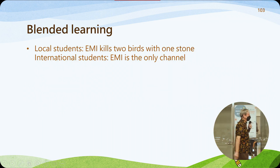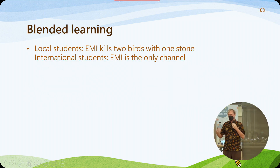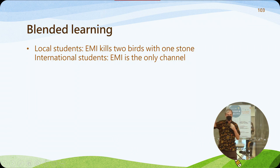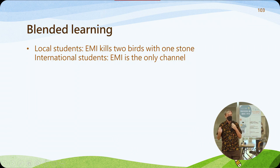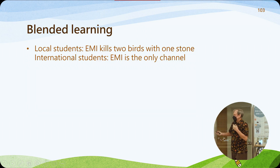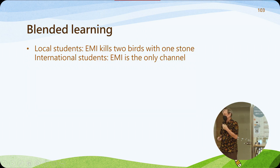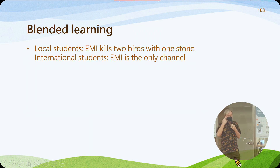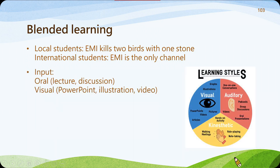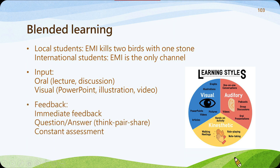For local students, EMI means they learn English as well as content. For international students, EMI is often the only choice because their Chinese isn't good enough to follow in Chinese. By using a mixture of oral visuals such as PowerPoints, illustrations, and videos, it helps them understand no matter what their learning style or background.